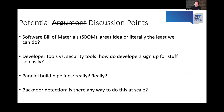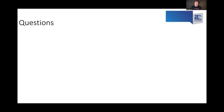I've identified four discussion points for the Slack discussion: Software bill of materials — great idea, or literally the least we could do for supply chain security? Developers versus security tools — how do developers get access to such cool stuff so easily? Parallel build pipelines — really? It's hard enough to build one pipeline, now we're going to build and manage two? And backdoor detection — is there any way to do this at scale? I think we're right on time, and I'll hop over to the Slack channel — looking forward to talking to some folks there.